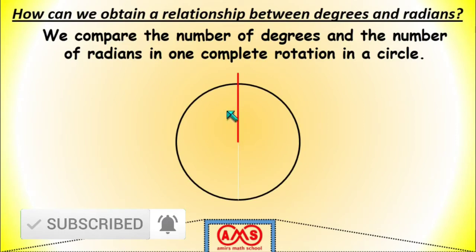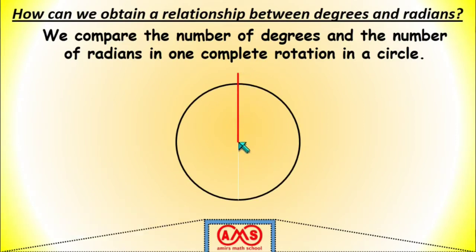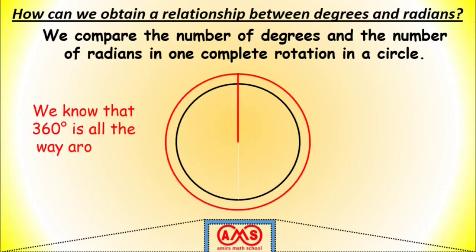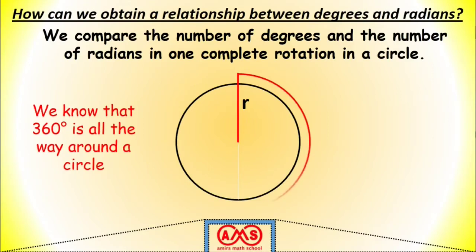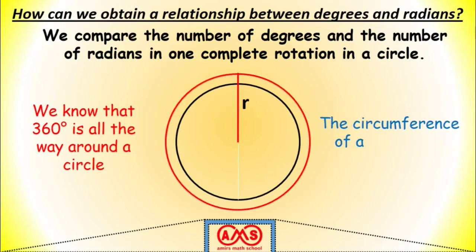Let's take a circle. This one is an initial line, and this line is rotated with respect to this center of the circle. We know that 360 degree is all the way around the circle. Now, if we take this length as r, the circumference of a circle of radius r is 2πr.